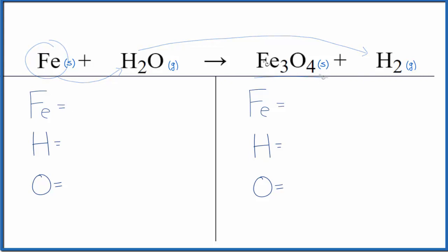Let's balance the equation. We have one iron, two hydrogens, and one oxygen in the reactants. In the products we have three iron atoms, two hydrogens, and then four oxygen atoms.